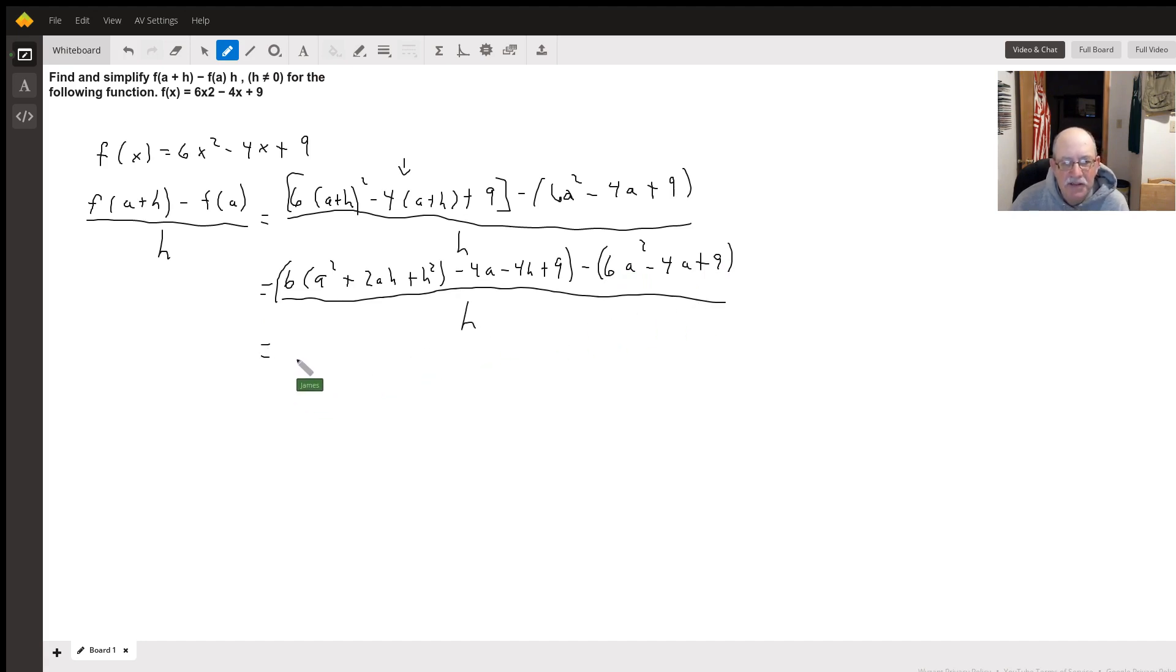And when we do our distribution here, I'm going to get rid of these parentheses over here too. I'm going to have 6a squared plus 12ah plus 6h squared minus 4a minus 4h plus 9, minus 6a squared plus 4a minus 9, all over h.